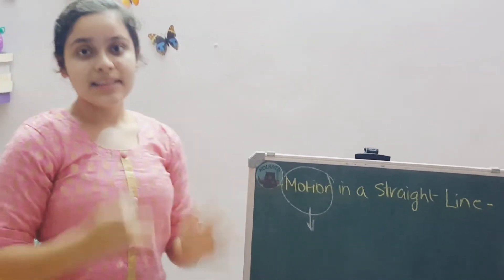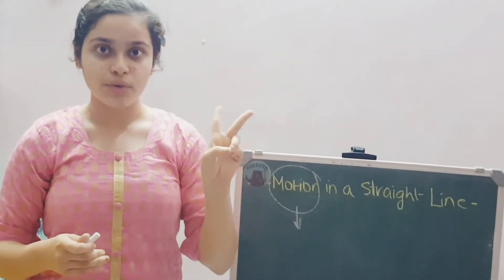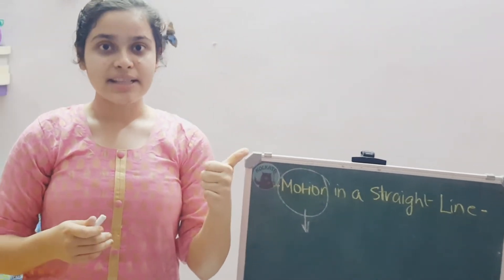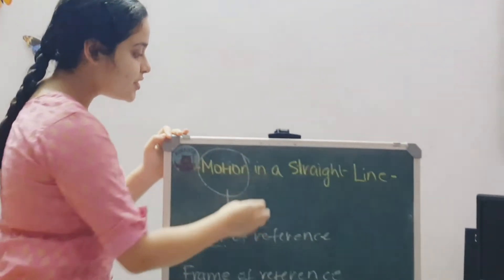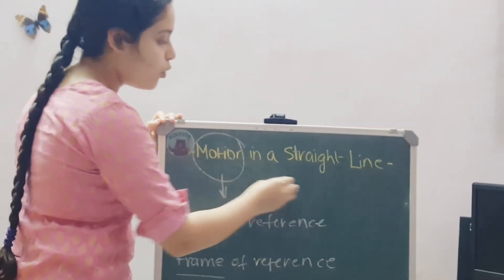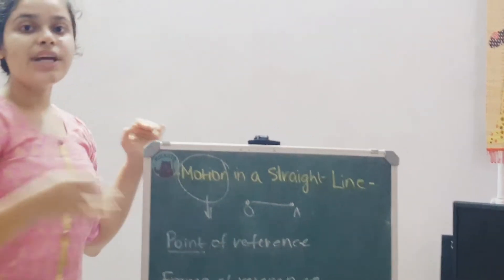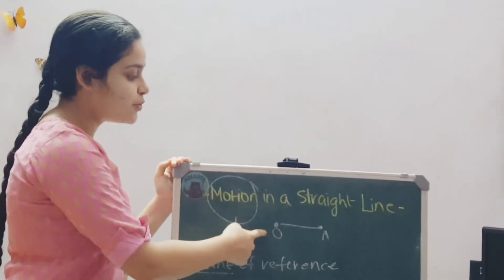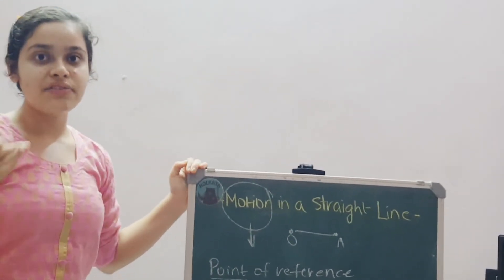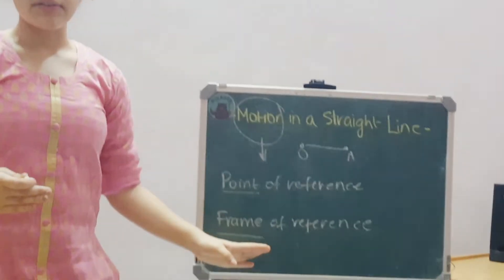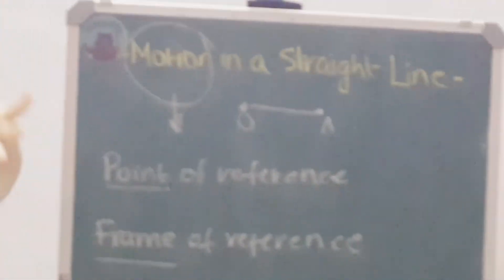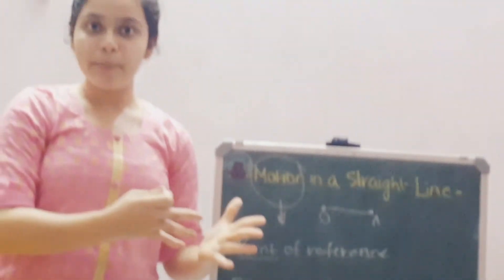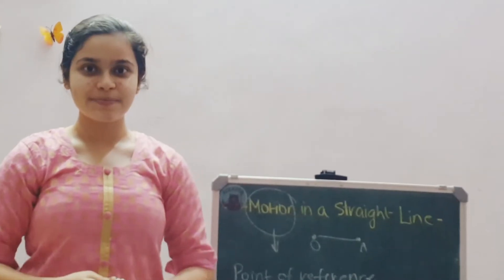However, to answer this question, we have to define two very important words. Point of reference and frame of reference. So, let me start with point of reference. If I have to say that an object moves from O to A, here the object is in motion and it starts moving from O. So, here O is the point of reference. So, what about frame of reference? Frame of reference is the coordinate system within which this whole motion is taking place. Like the XY plane, the YZ plane or the ZX plane.